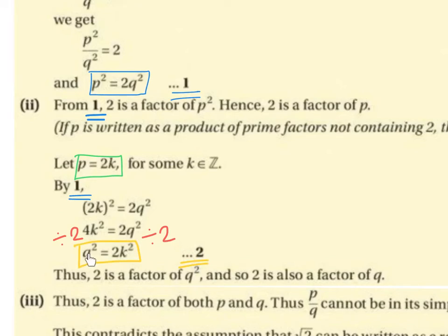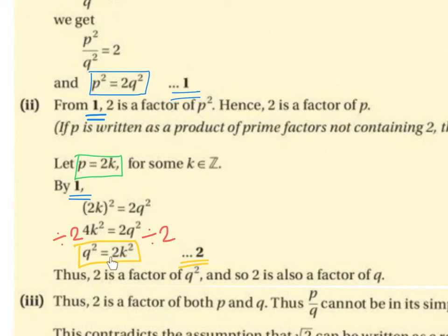So we have q squared equals 2k squared, which is very similar to what we had before — p squared equals 2q squared. And since from that we were able to say 2 is a factor of p, we can do the same and say 2 is a factor of q. So if q squared equals 2k squared, thus 2 is a factor of q squared — q squared equals 2 times k squared — so 2 is a factor of q squared, and therefore 2 is a factor of q.